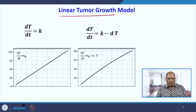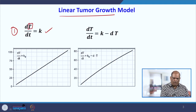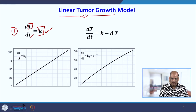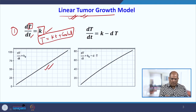To start with, we have the linear tumor growth model. The first equation says dT/dt = k, where capital T is the tumor and t is the time. The rate of change is a constant, and we call it linear tumor growth. It is easy to solve: T = kt plus some constant. Since this is a linear equation, the graph is a straight line.